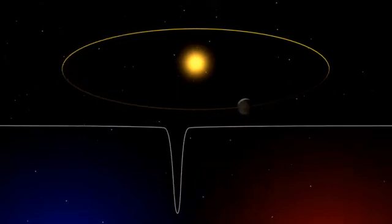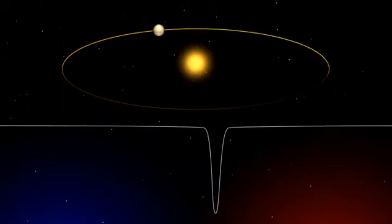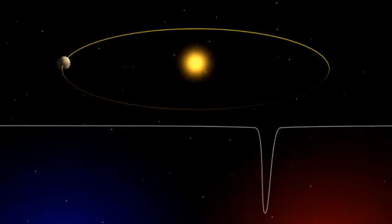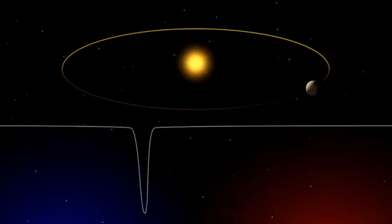The radial velocity method, which detects small changes in the radial velocity of a star as it wobbles slightly under the gentle gravitational pull from an unseen exoplanet, has been the most prolific method in the search for exoplanets.